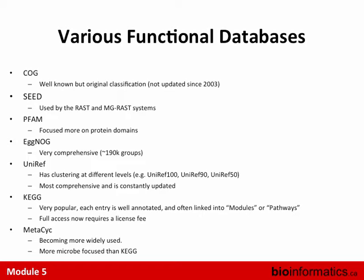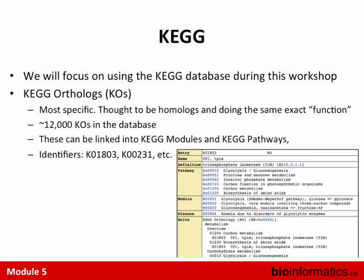Gene Ontology is another really common system — it's an ontology with a hierarchy structure where genes get mapped into more and more general categories. Gene Ontology is widely used, though for microbes some genes aren't as well represented compared to human and other eukaryotes. But it's still pretty widely used.